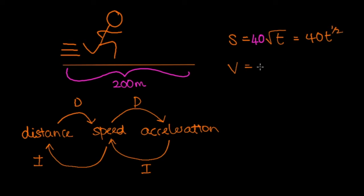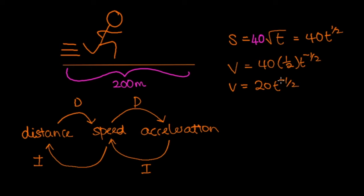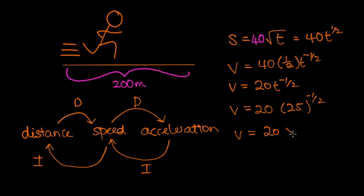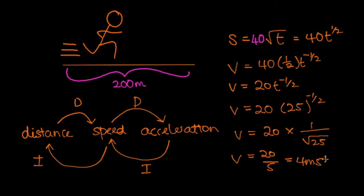Using the power rule, the derivative of 40t to the half is 40 times a half t to the minus a half. Simplifying, we get v equals 20t to the minus a half. To find speed at the finish line we know he passes it at t equals 25, so v equals 20 times 25 to the minus a half. Since 25 to the minus a half equals 1 over the square root of 25, v equals 20 over 5 — so his speed is 4 meters per second as he crosses the finish line.